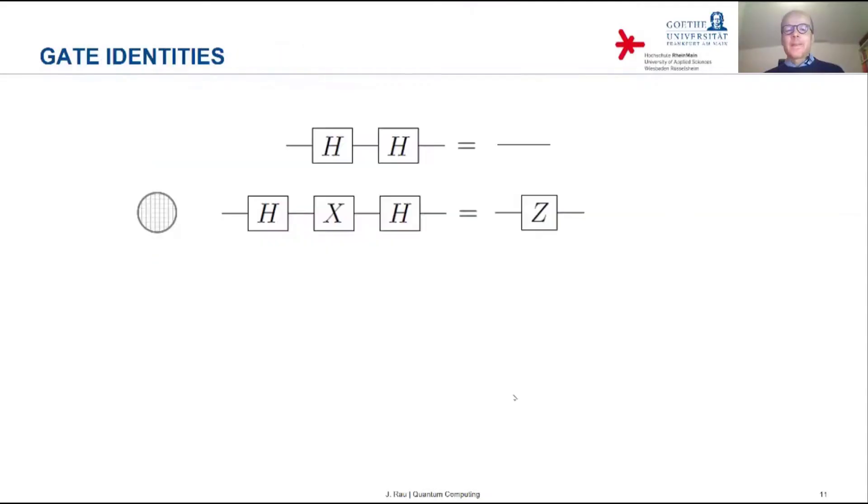So the combination of these three gates has the same effect as the Pauli Z gate. You can also show the same result simply by multiplying the respective matrices, and then you get as a result the Pauli Z matrix.